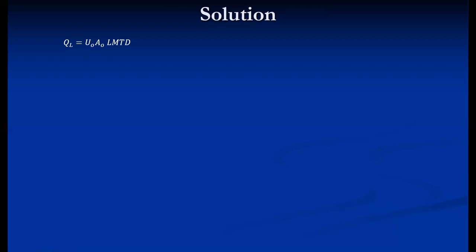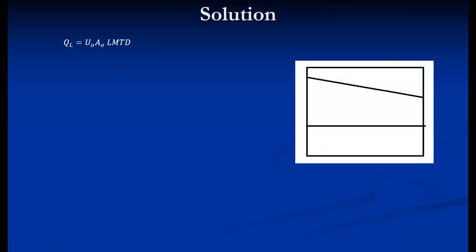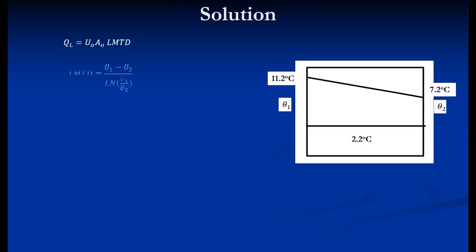Since U values — H_i and H_o — are indirectly given, we use the LMTD approach. The equation is Q_L = U_o · A_o · LMTD, where U_o uses the outer area. The evaporating temperature is 2°C, water inlet is 11.1°C, water outlet is 7.2°C. So θ1 and θ2 are calculated, and LMTD = (θ1 − θ2) / ln(θ1/θ2). The Q_L value is also known from the 20 TR rating.